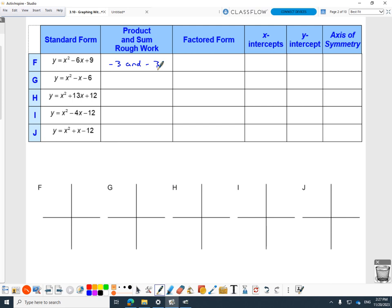How about this one? Multiply to negative 6 but add to negative 1. He's got negative 3 and 2. When you multiply those together, you get negative 6. When you add them together, you get negative 1. And again, your multiplication table can help you get there.